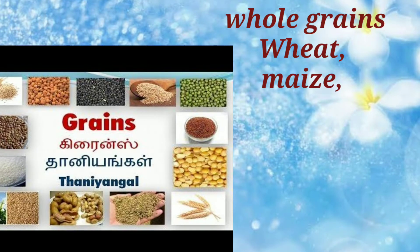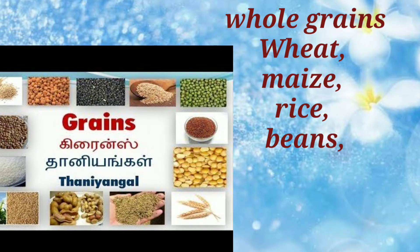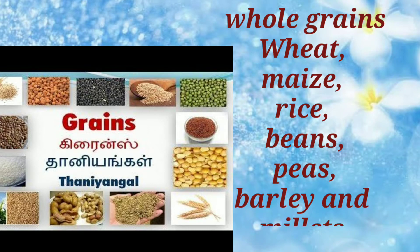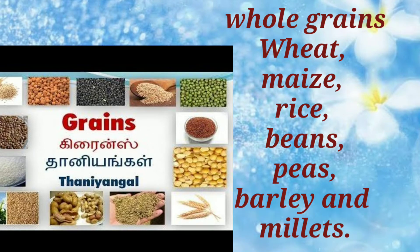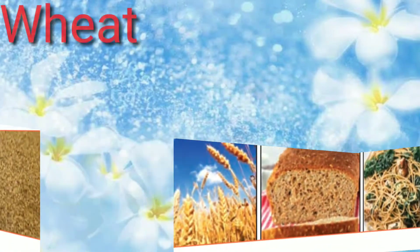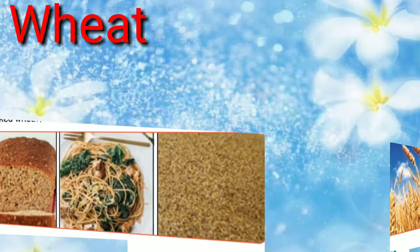maize, rice, beans, peas, barley, and millets. Now let's see a few examples of grains. The first one is wheat — it is the most important crop cultivated in the world.